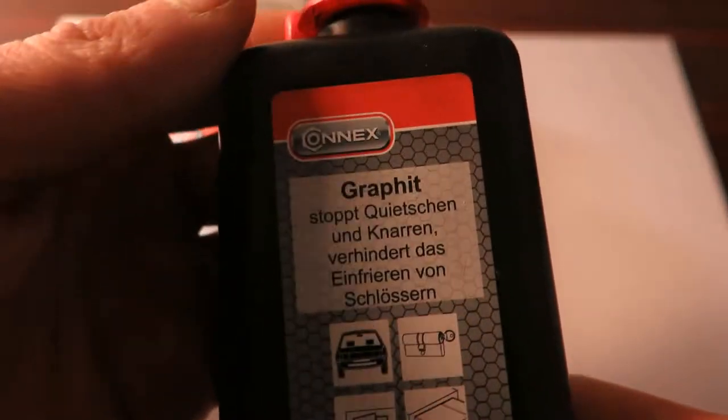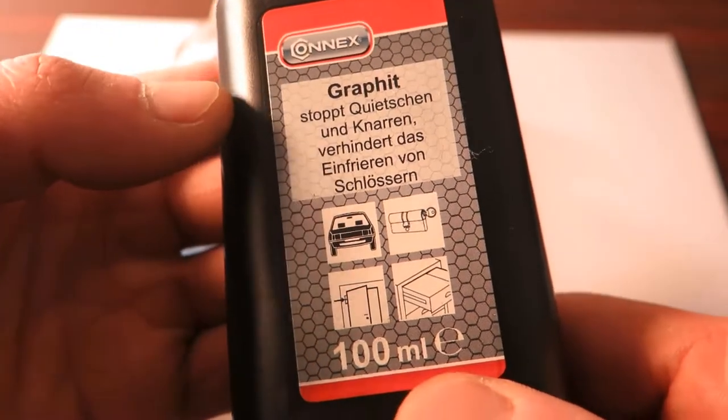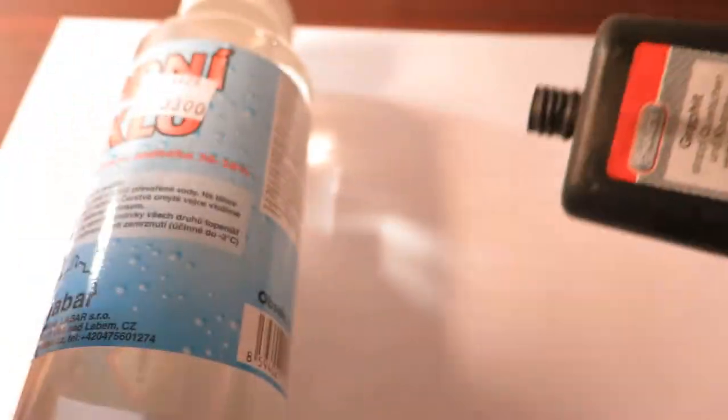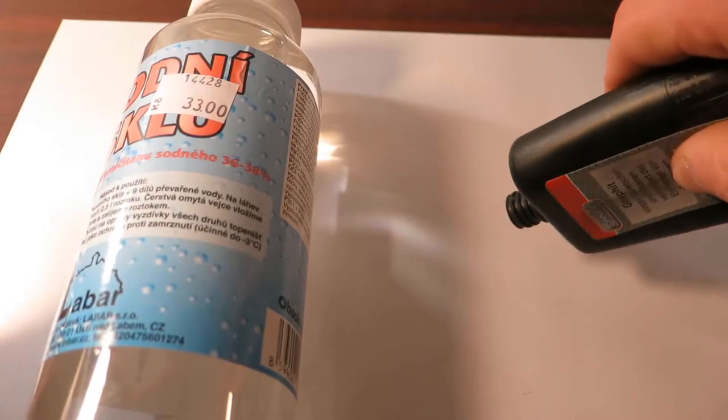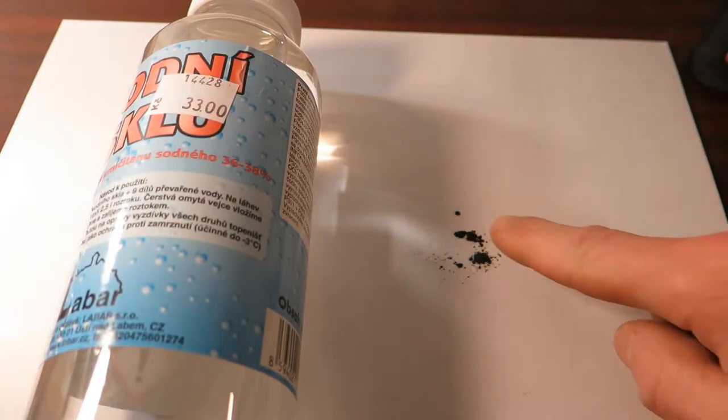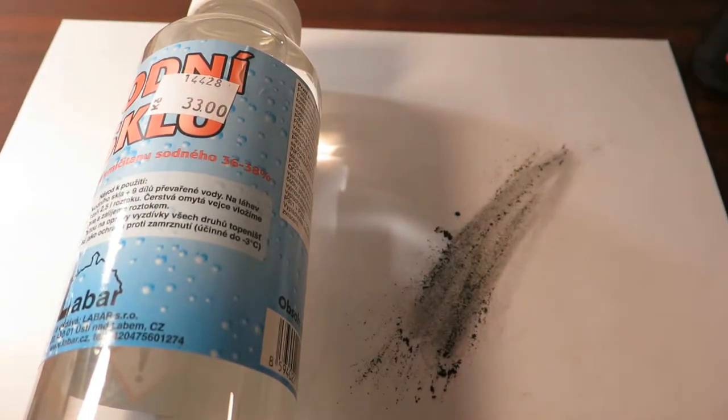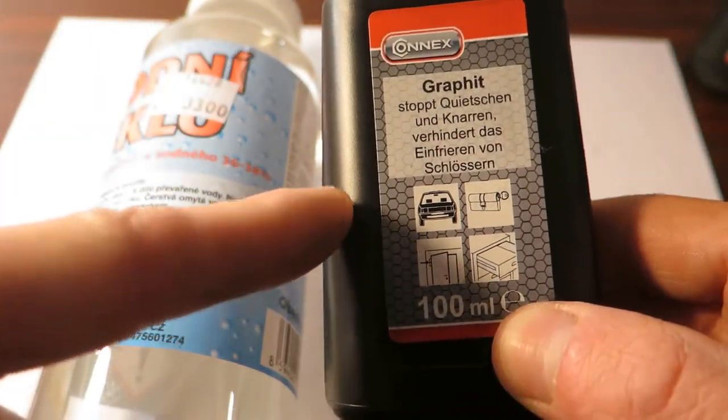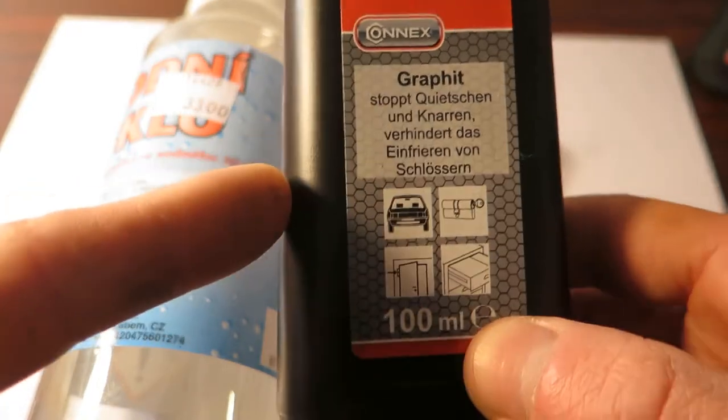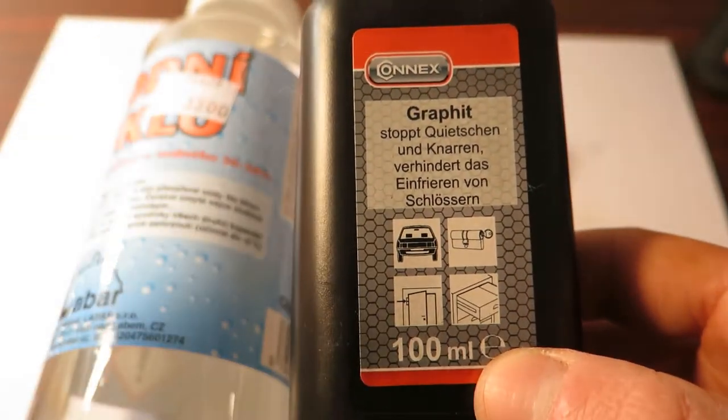So I will use this graphite powder, it looks like this. Really fine graphite powder. This is used for lubrication of bearings and things like that, dry lubrication basically.